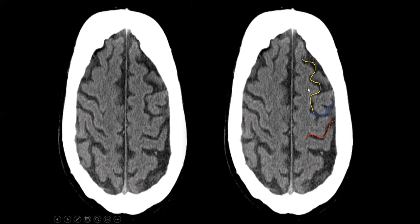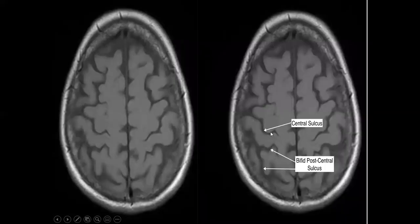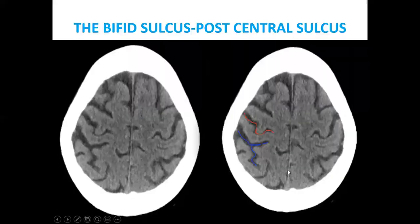The orange color shows the hook sign — also called the omega sign — which is the central sulcus. This is the frontal, this is the parietal. The hook or omega sign identifies the central sulcus. Note that the postcentral sulcus is bifid in nature, and the central sulcus can also appear bifid — this bifid characteristic helps confirm the central sulcus.